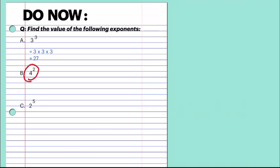For the second one, 4 to the power 2 means 4 is multiplied by 4, 2 times. So 4 into 4 is 16. And the last one is 2 to the power 5, so we multiply 2 five times: 2 into 2 into 2 into 2 into 2. The final answer comes to 32.